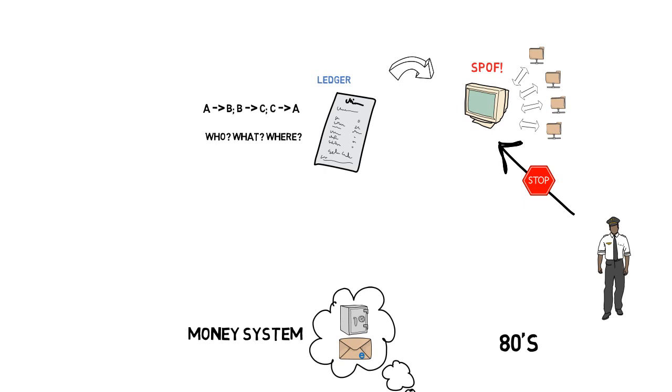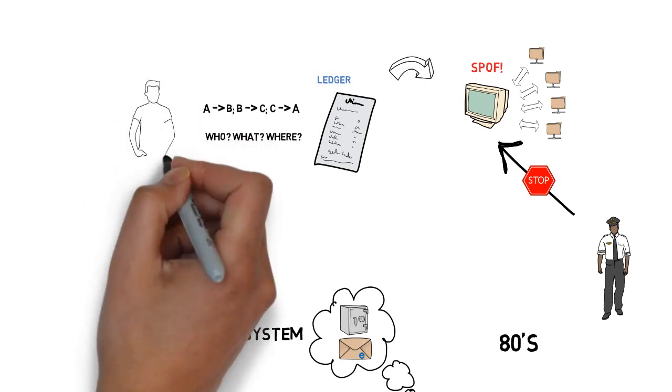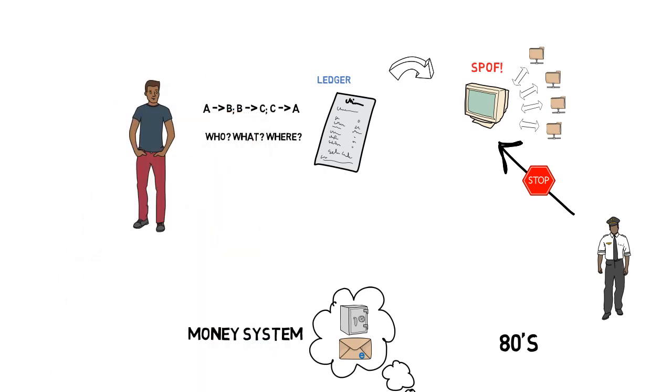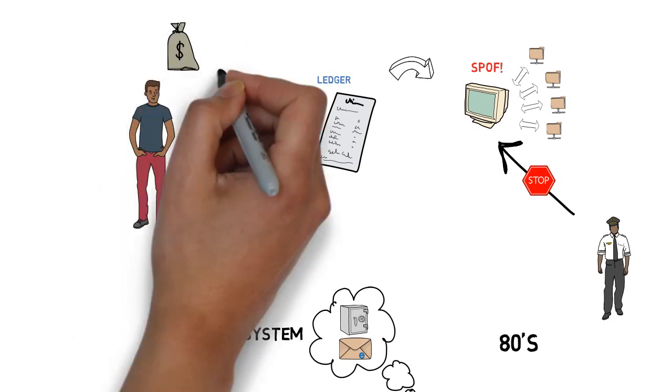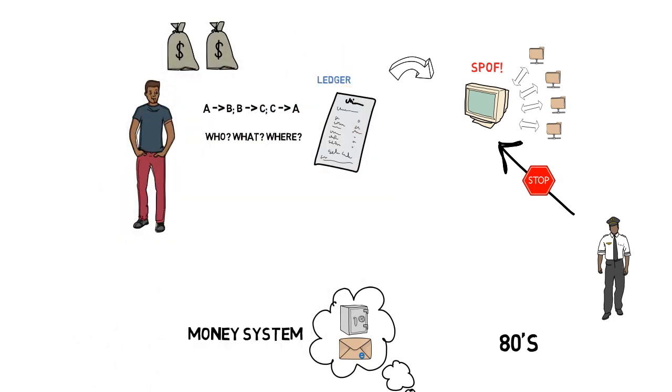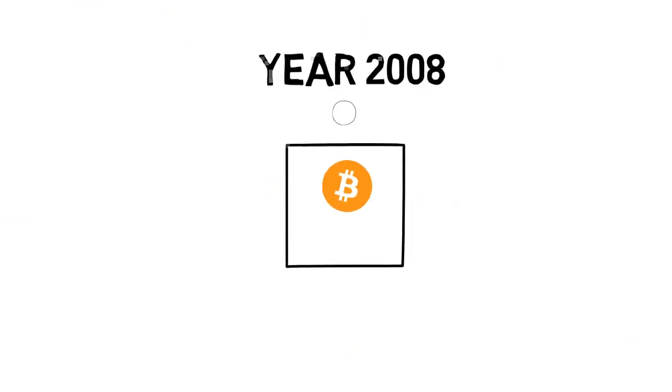This has happened in the history. On the other hand, people who are in control of the server might corrupt as well. They could cash out the money, shut down the project, take the money and run away. That has also happened in the history. So in summary, it wasn't a great success until Bitcoin was born in 2008.